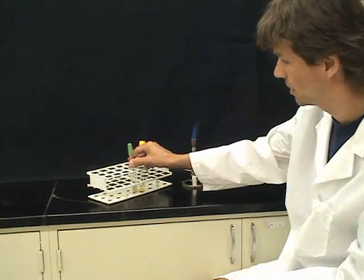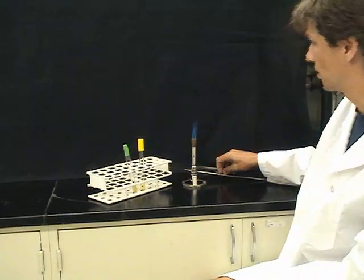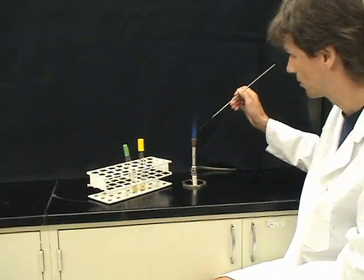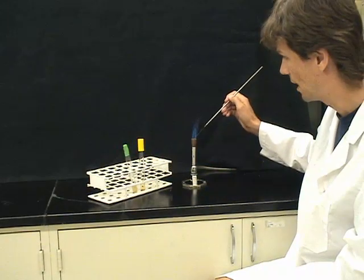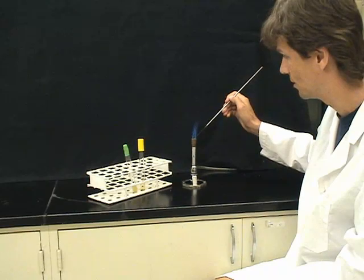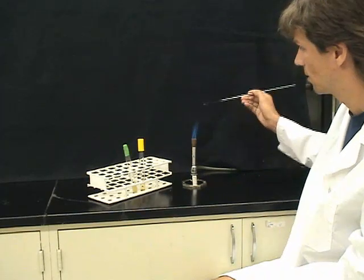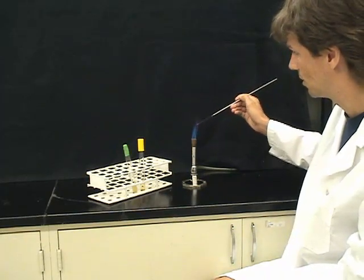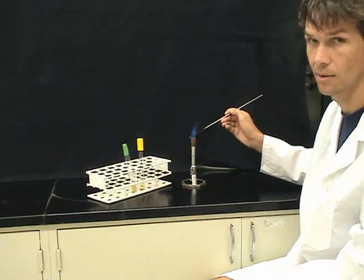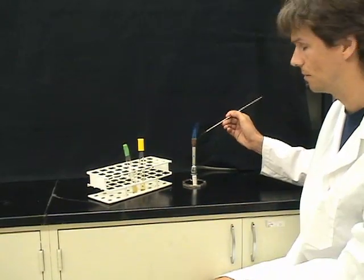The second mistake that's made often is when a student flames the loop, they'll stick it down here and notice how it's not turning red. This is not sterilizing it. Or they'll just not do it long enough and it won't become sterile.